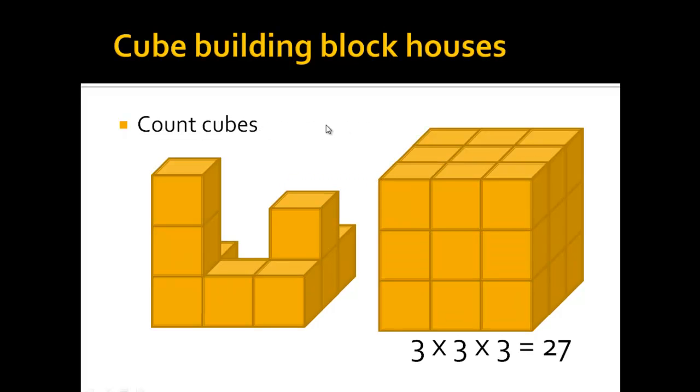Often when being confronted with cube houses, you're supposed to count how many cubes there actually are. In this case, we take a three times three times three structure, so altogether there are 27 cubes it can be made of, and here you will have to count how many cubes there are.